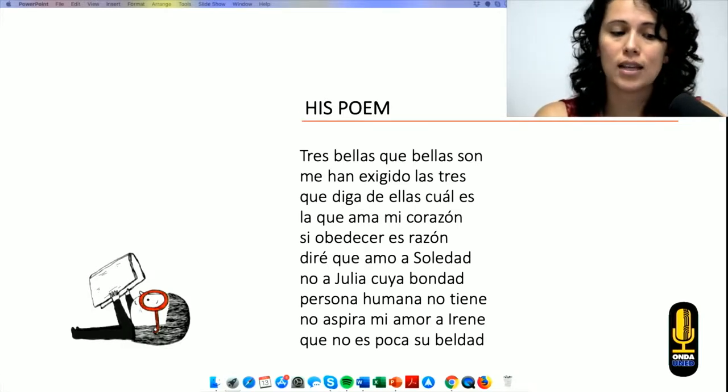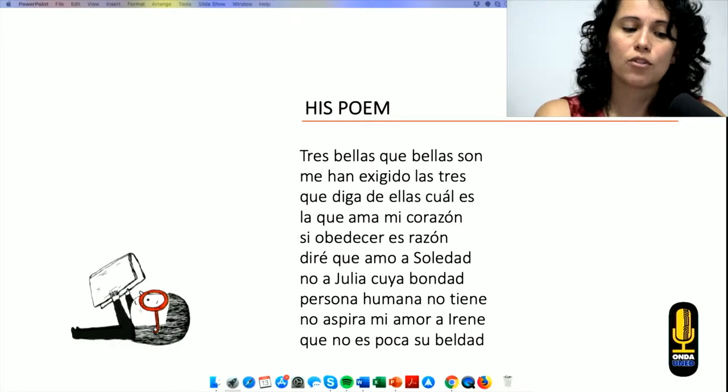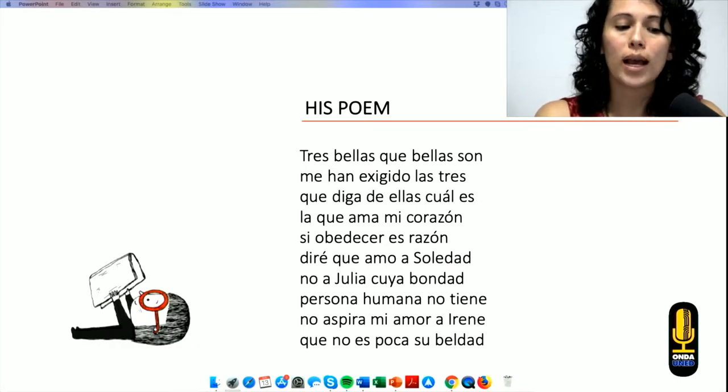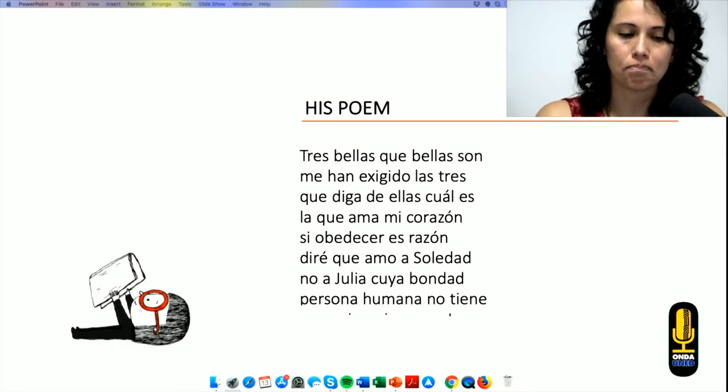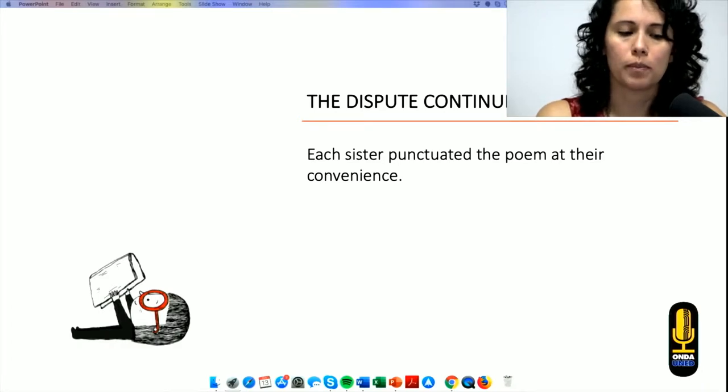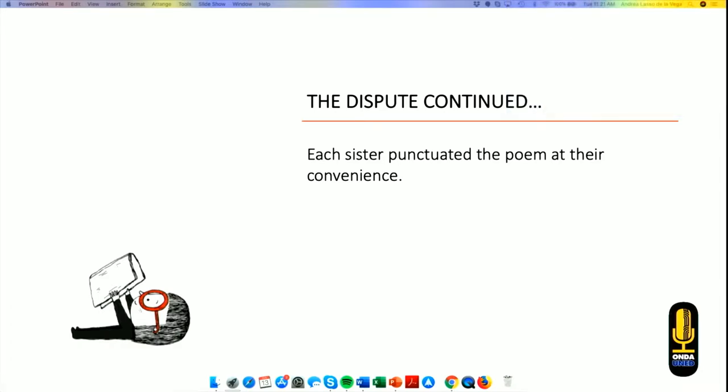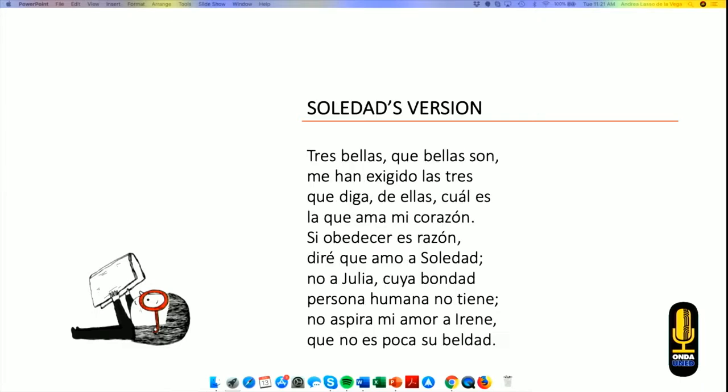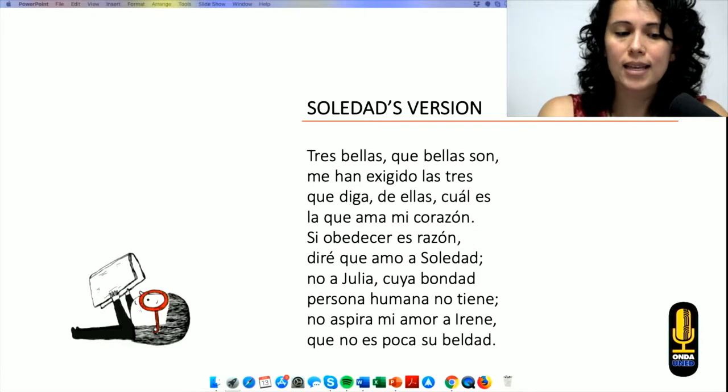This is what he wrote without typographical clues. Tres bellas que bellas son. Me han exigido las tres que diga de ellas cuál es la que ama mi corazón. Si obedecer es razón, diré que amo a Soledad. No a Julia, cuya bondad persona humana no tiene. No aspira mi amor a Irene, que no es poca su beldad. This was a big problem because each sister punctuated the poem at their own convenience. Here it's Soledad's version.